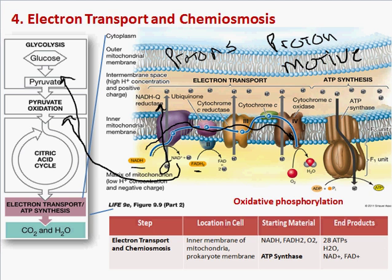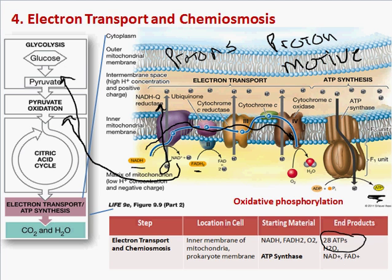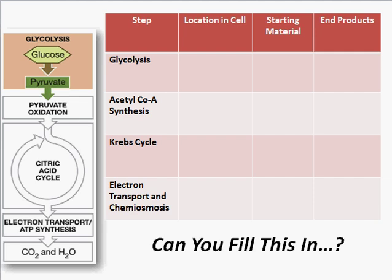You can see why we need oxygen when we breathe — it drives our electron transport chain, which is where we make our ATP. We make 28 ATPs here; all the previous steps didn't make very much. What I would recommend is you take a look at this figure on the left and fill in the table by yourself — if you can do that, then you understand cellular respiration.